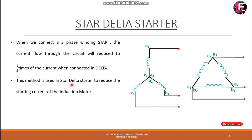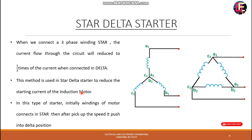This method is used in the Star-Delta starter to reduce the starting current of the induction motor. When the motor picks up speed, the connection is changed to delta. In this type of starter, initially the windings of the motor connect in star, then after picking up speed, switch into the delta position.